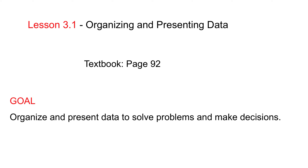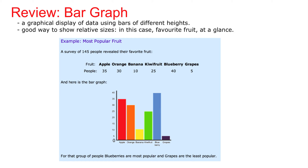Let's start with your friend and mine — Mr. Bar Graph. A bar graph is a graphical display of data using bars of different heights, a good way to show relative sizes. In this case, you're looking at fruit, and it's color-coded — the apple is red, orange is orange, and so on and so forth.